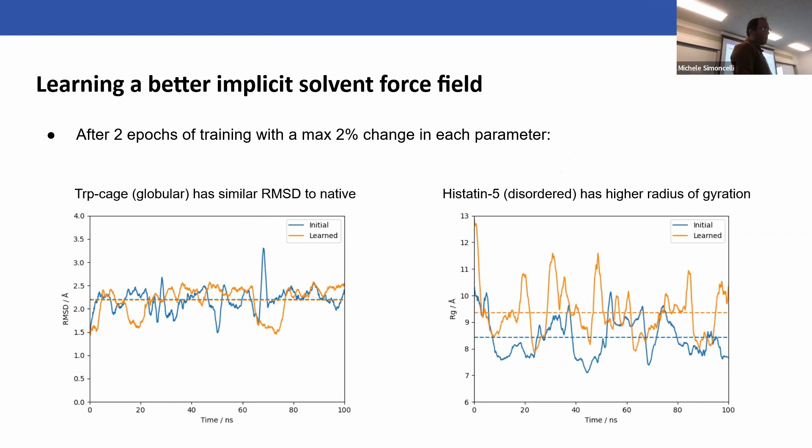In fact what we find is quite - within just two epochs of training, so that's two one-nanosecond simulations on the seven proteins, allowing just a maximum two percent change with each parameter - this really is fine tuning. We find that we can actually improve the force field. Looking at tryptophan cage, which is a globular protein, we find it has a similar RMSD to native when you simulate it in the new force field. The dotted lines here represent the average. However, when you simulate AS1b, which is a small disordered protein, you see that the radius of gyration has improved, has increased, which is the direction you'd want it to go. In fact you would want it to go even higher than this. So current work is basically trying to improve the performance on disordered proteins whilst not degrading the performance on folded proteins.